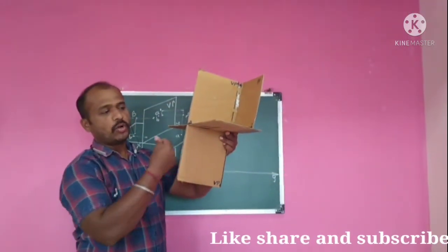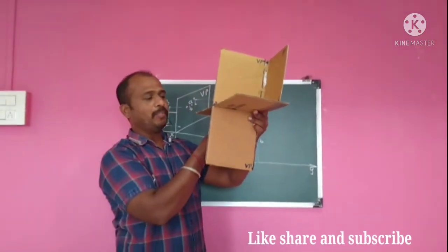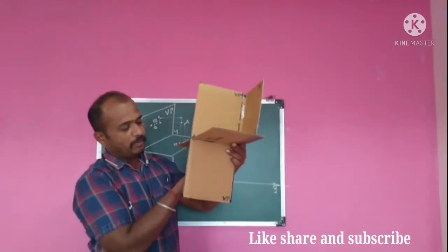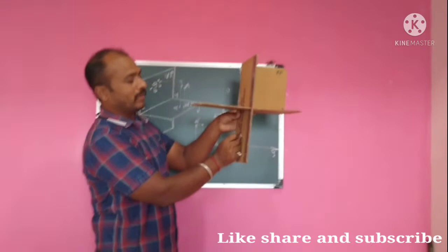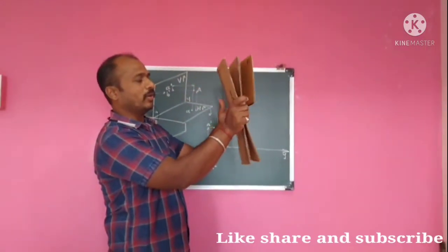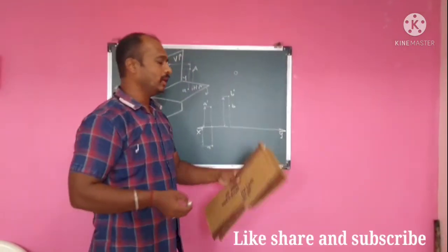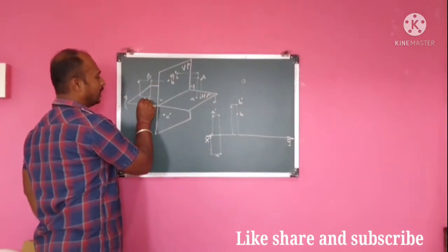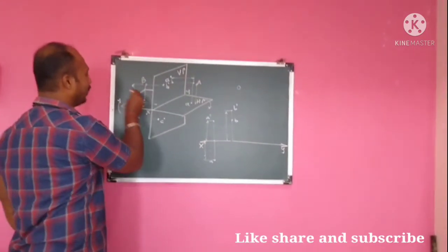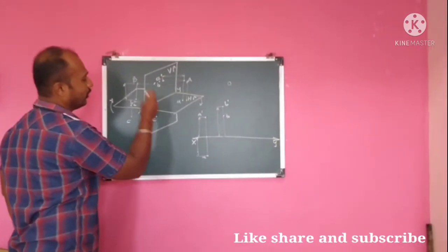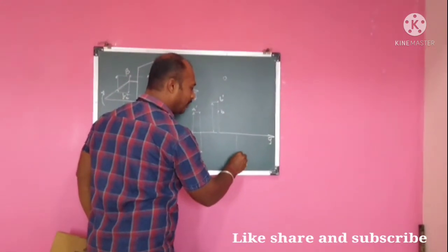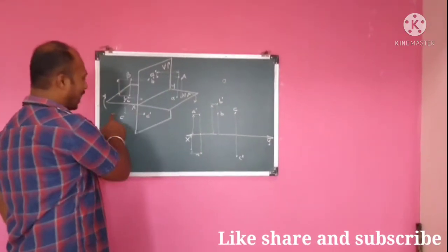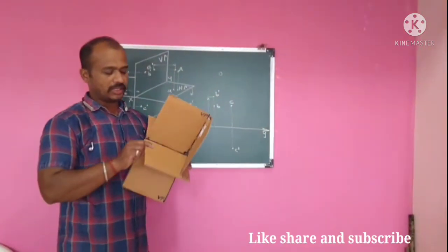In the third quadrant, the point is behind VP and below HP. Its front view will be on the VP and the top view will be on the HP. When we rotate, the front view lies below the XY line and the top view goes above the XY line. So for point c: the front view (c-dash) is below XY and the top view (c) is above XY. This is the third quadrant position — behind VP and below HP.